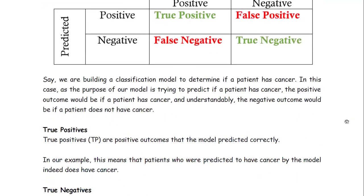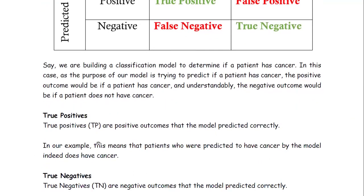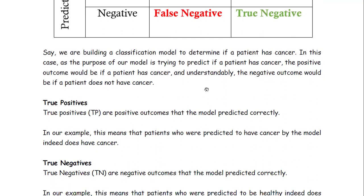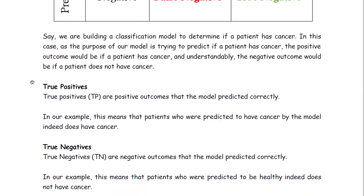Before going to the table, let's discuss these terms with some examples. Say we are building a classification model to determine if a person has cancer or not. The purpose of our model is to predict if a person has cancer. The positive outcome would be if a person has cancer, and the negative outcome would be if a patient does not have cancer.